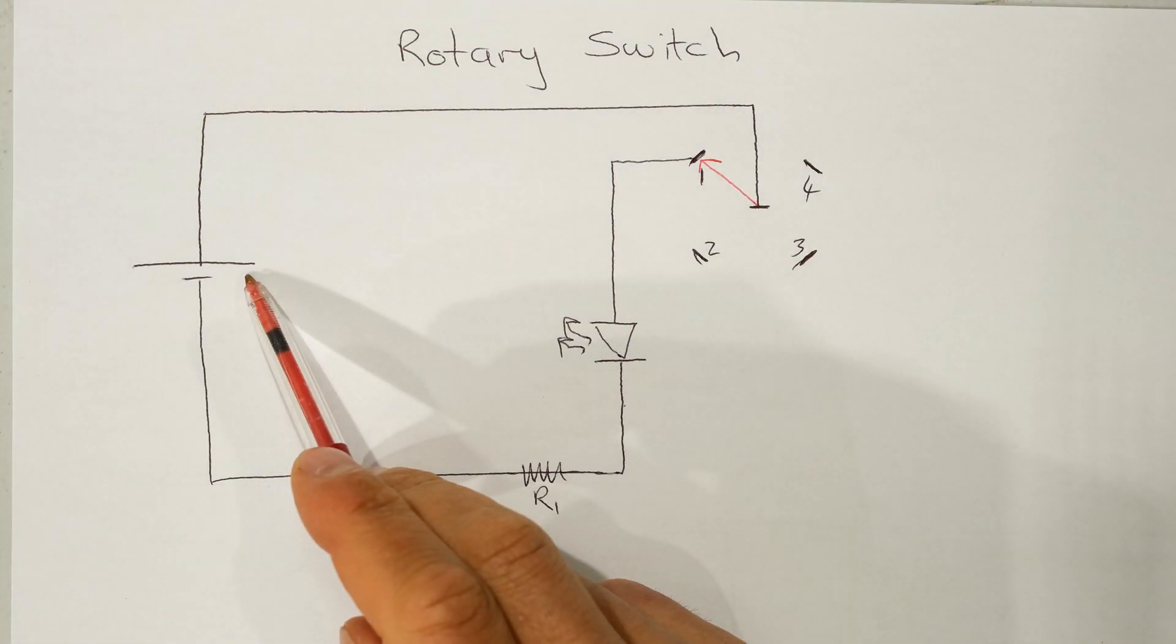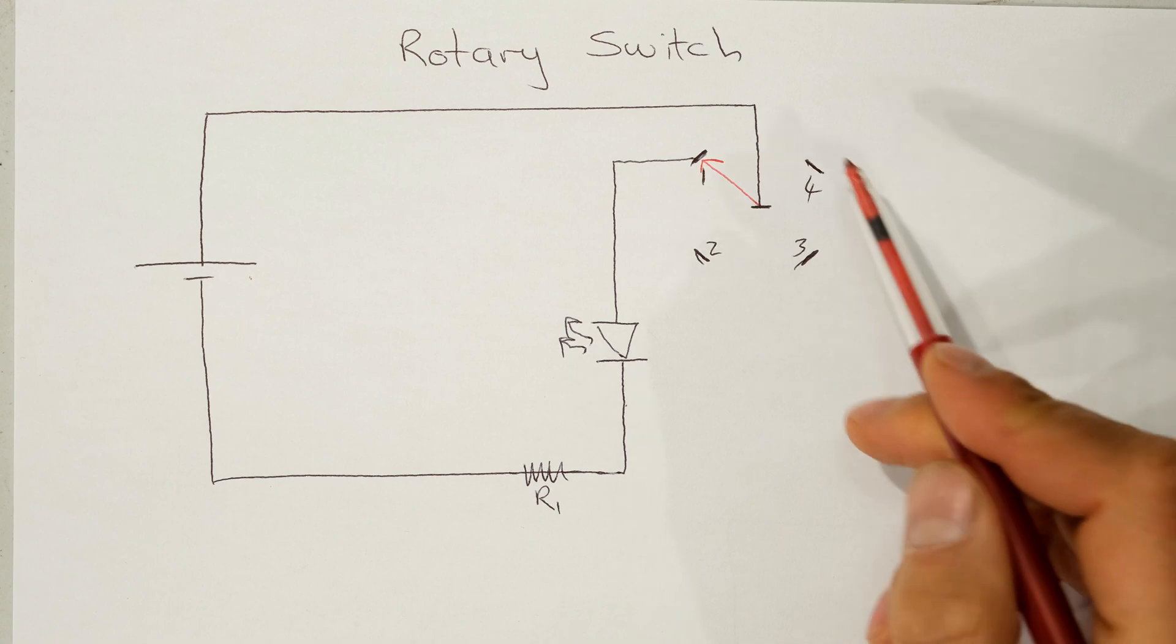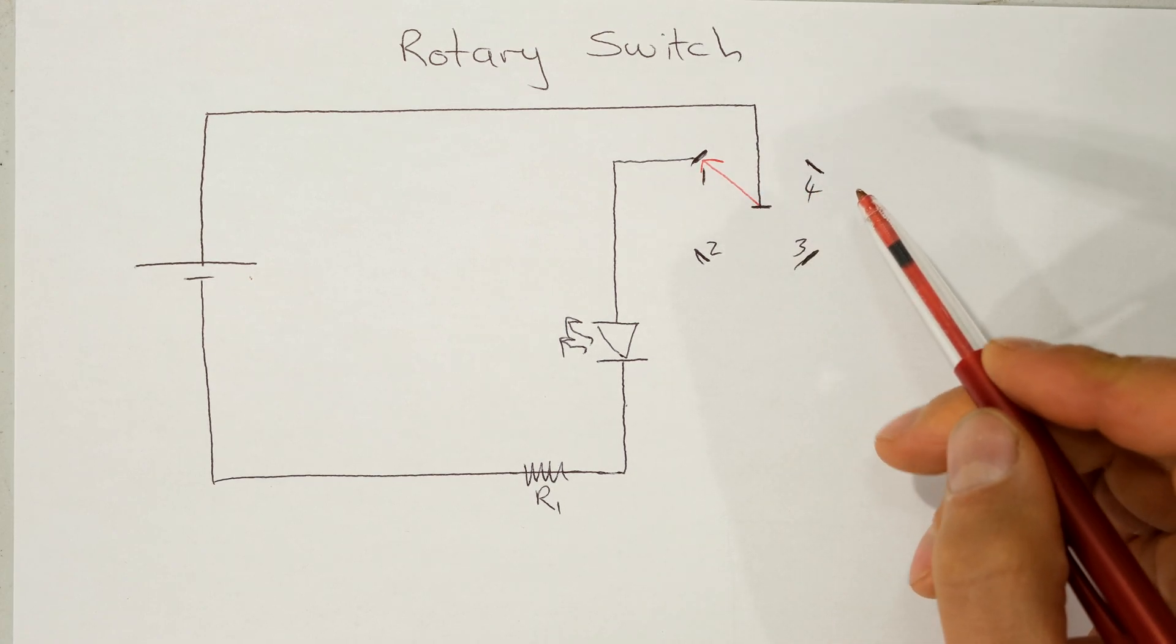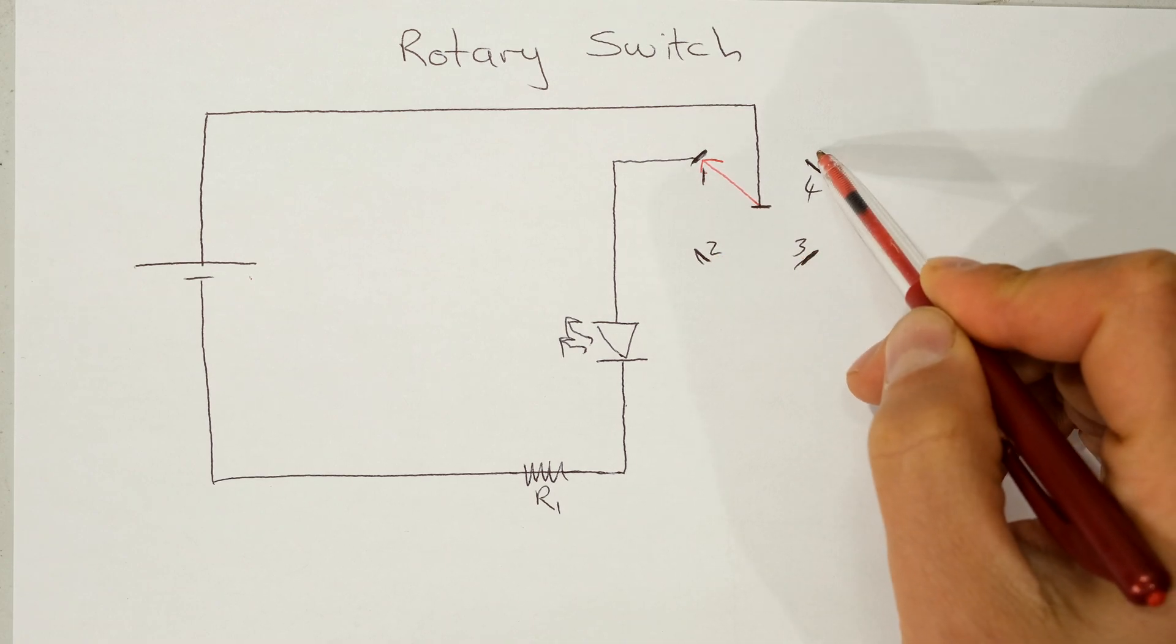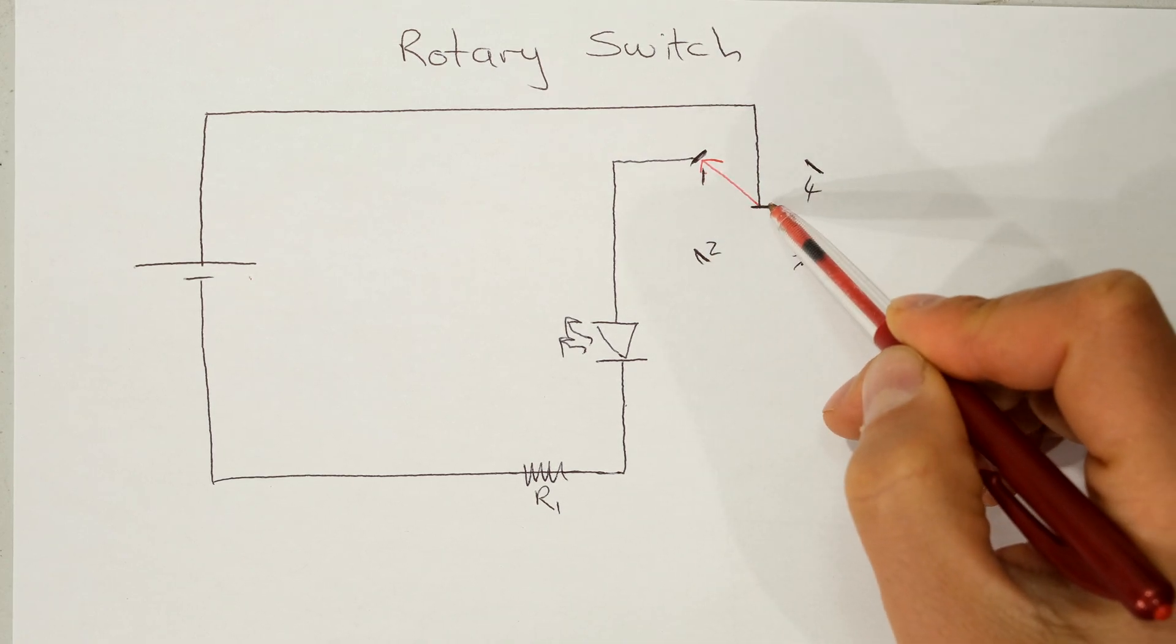Over here I've got a little circuit with a DC supply and a rotary switch. This is a four-way rotary switch. Notice I've got one output there, one output there, another, another. So I have four outputs and one input.